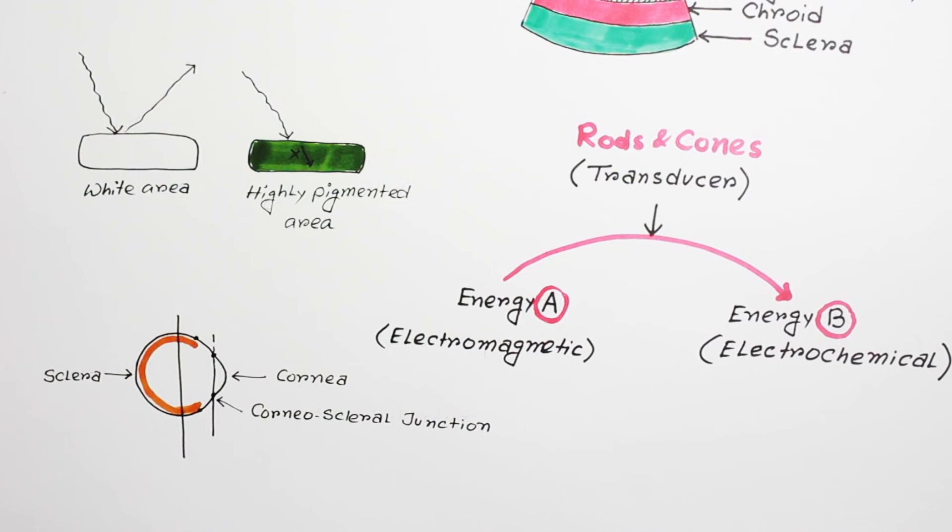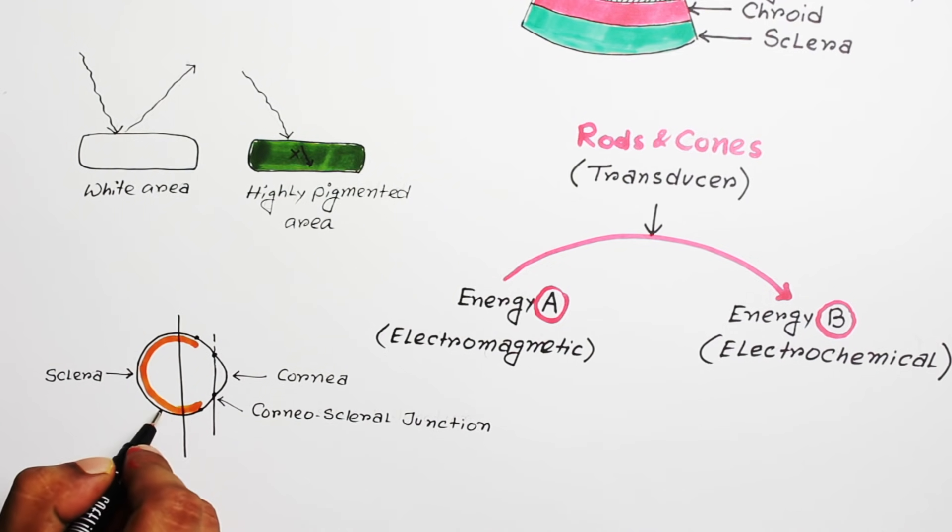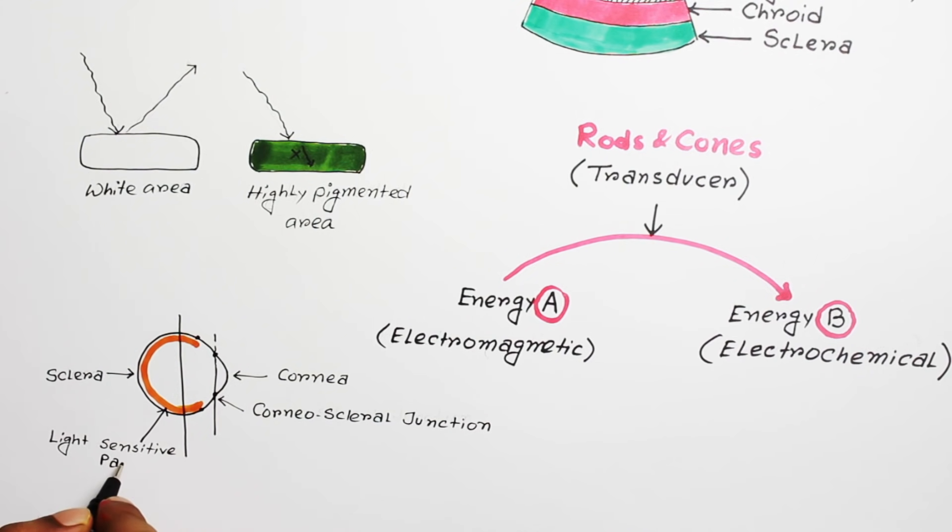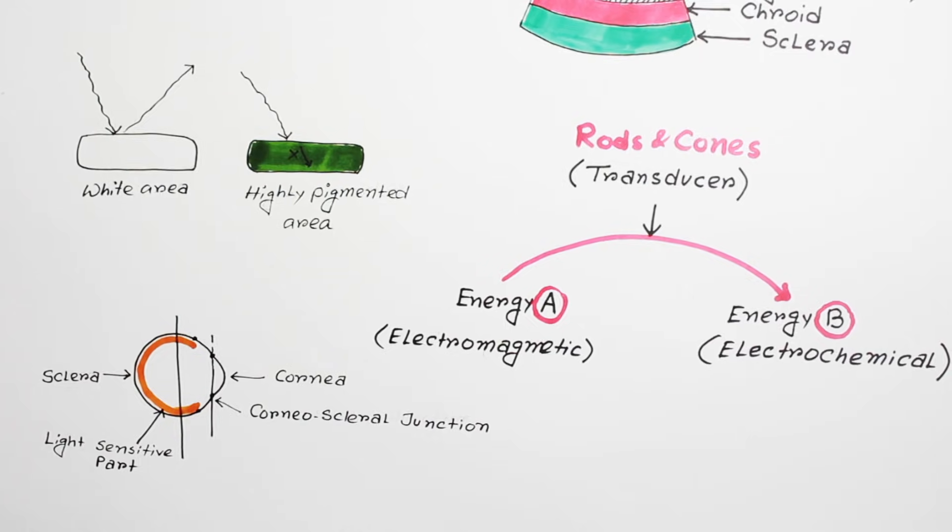So, what does it mean? Only this portion of retina is sensitive to light and the portion anterior to this part is not sensitive to light.